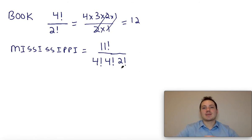When this fully expands out, it's going to be eleven times ten times nine times eight times, so on and so forth until you get to one over four times three times two times one times four times three times two times one times two times one. And you would simplify that and you would get a number that would tell you how many different ways the letters in the word Mississippi can be arranged.